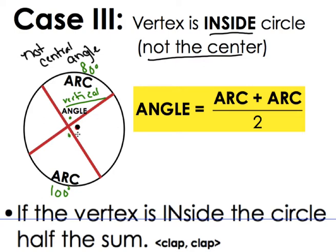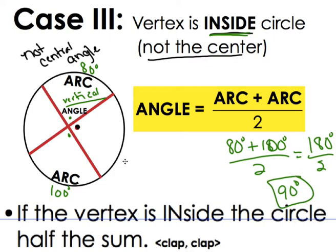If we wanted to figure out what that angle that is inside the circle, not the center, we would take the two arcs. So we take 80 plus 100 and we divide it by 2. So 80 plus 100 is 180 divided by 2 gives me 90.